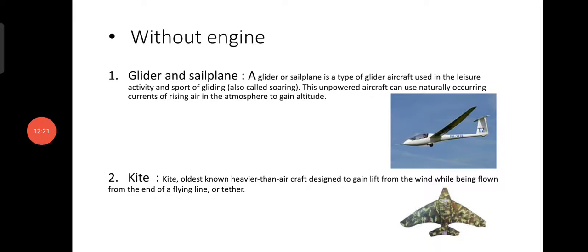In without engine aircraft, as the heading suggests, there is no engine. There are two types: glider and sailplane, and kite. A glider or sailplane is a type of glider aircraft used in the leisure activity and sport of gliding, also called soaring. People jump from a cliff and hover — it has no engine. This unpowered aircraft can use naturally occurring currents of rising air in the atmosphere to gain altitude, though it is heavier than air, lifted by its large wingspan.